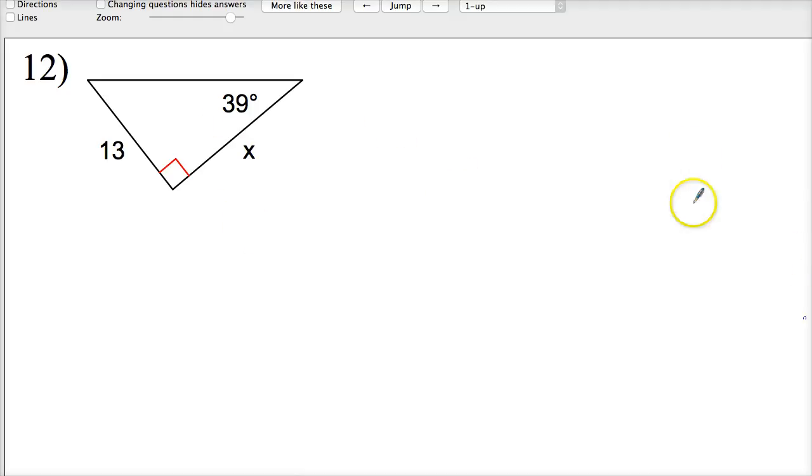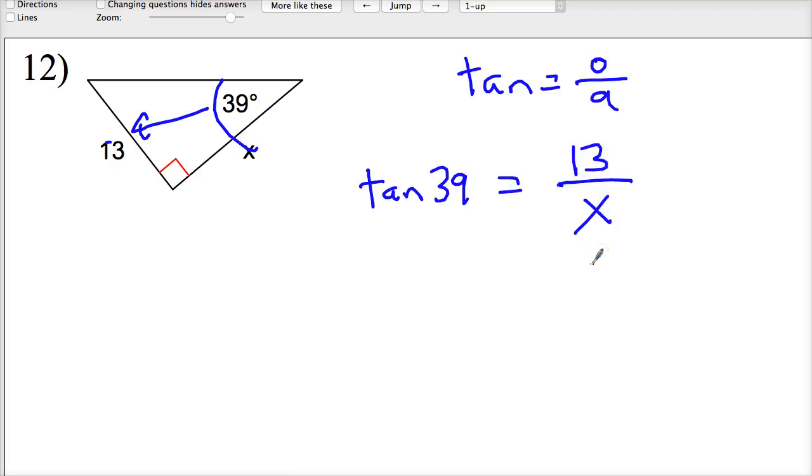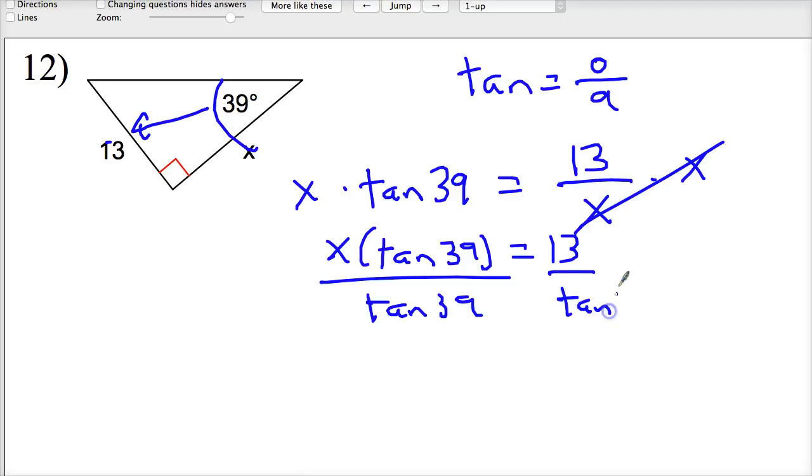One more like this. In this case, here's my angle of reference. Opposite over adjacent because the hypotenuse is not used. So, this is a tangent question. Tangent of 39 is equal to 13 over x. It's not just conveniently x over 13 because that math is easier. It's not how it works. Times x. Those cancel. Times x over here. x times tangent of 39. Divide by the tangent of 39. x is equal to 16.1.